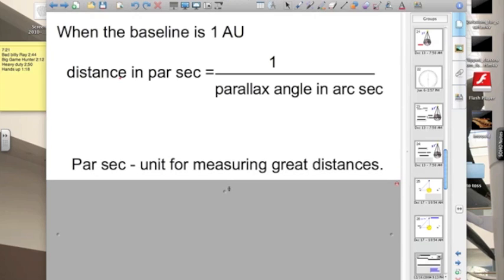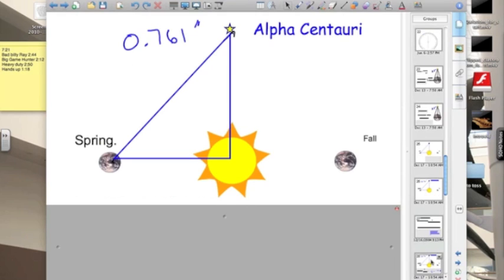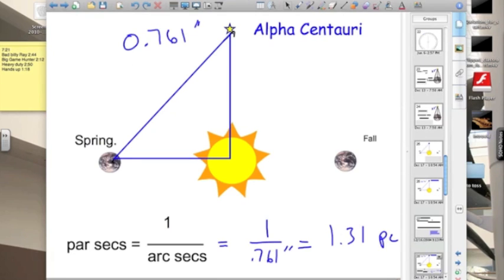So a parsec is a unit for measuring great distances, and it's a really beneficial unit for us because now we don't have to use trig. If I have a baseline of 1 AU and my parallax angle is in arc seconds, I simply use my equation 1 over the arc seconds and get a distance in parsecs. In this case, the distance is 1.31 parsecs.